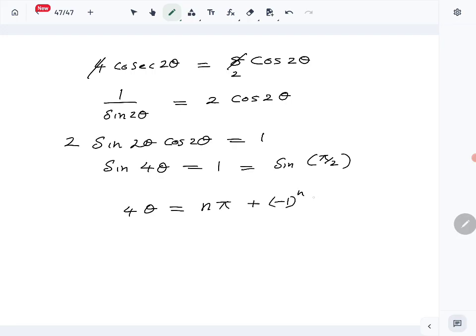So we will write down the general solution: 4 theta is n pi plus (-1)^n times pi over 2. So then theta is equal to n pi over 4 plus (-1)^n times pi over 8, where n belongs to the integers. So that is the general solution of the given trigonometric equation. That is question number 10 answer.